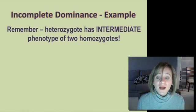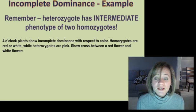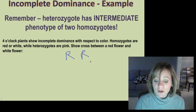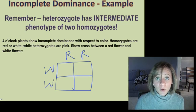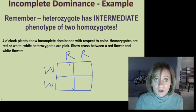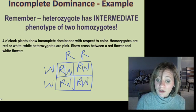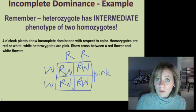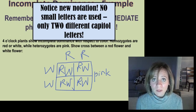Here's our first example. Remember that heterozygotes have this intermediate blended phenotype of the two homozygotes. Four o'clock plants show incomplete dominance: homozygotes are red or white, while heterozygotes are pink. Crossing a red flower with a white flower — notice I'm using two different capital letters, like big R and big W. This is the new notation for incomplete dominance; no small letters, only two different capital letters. All offspring have genotype RW, and all offspring have the phenotype pink.